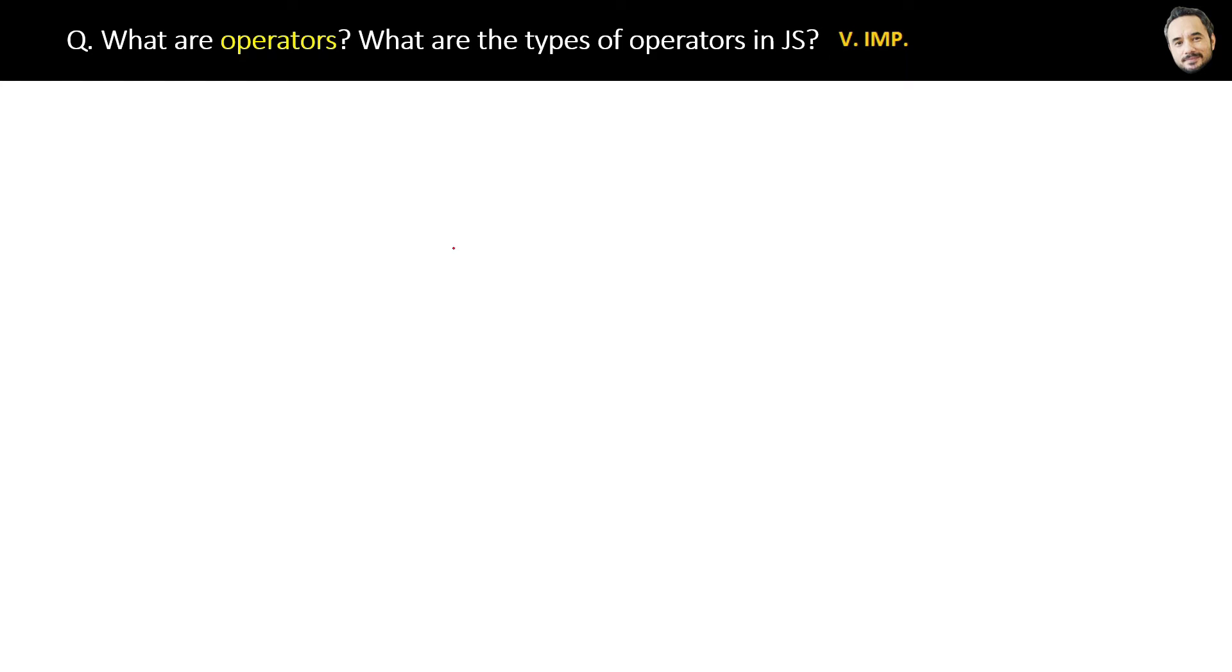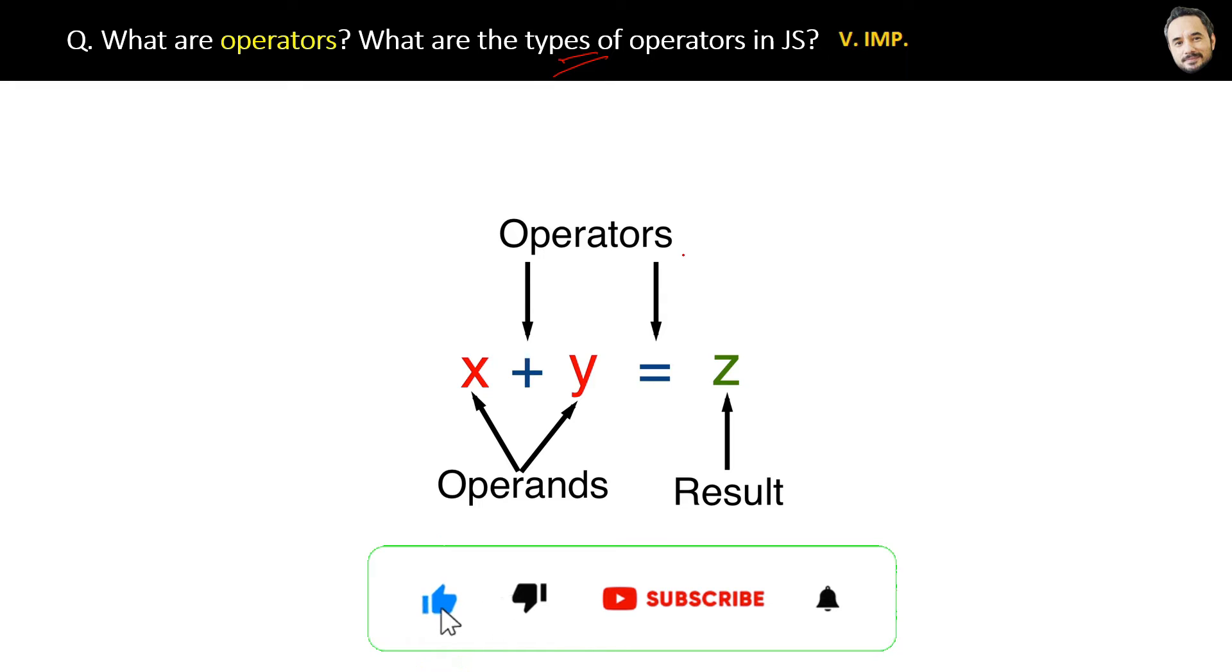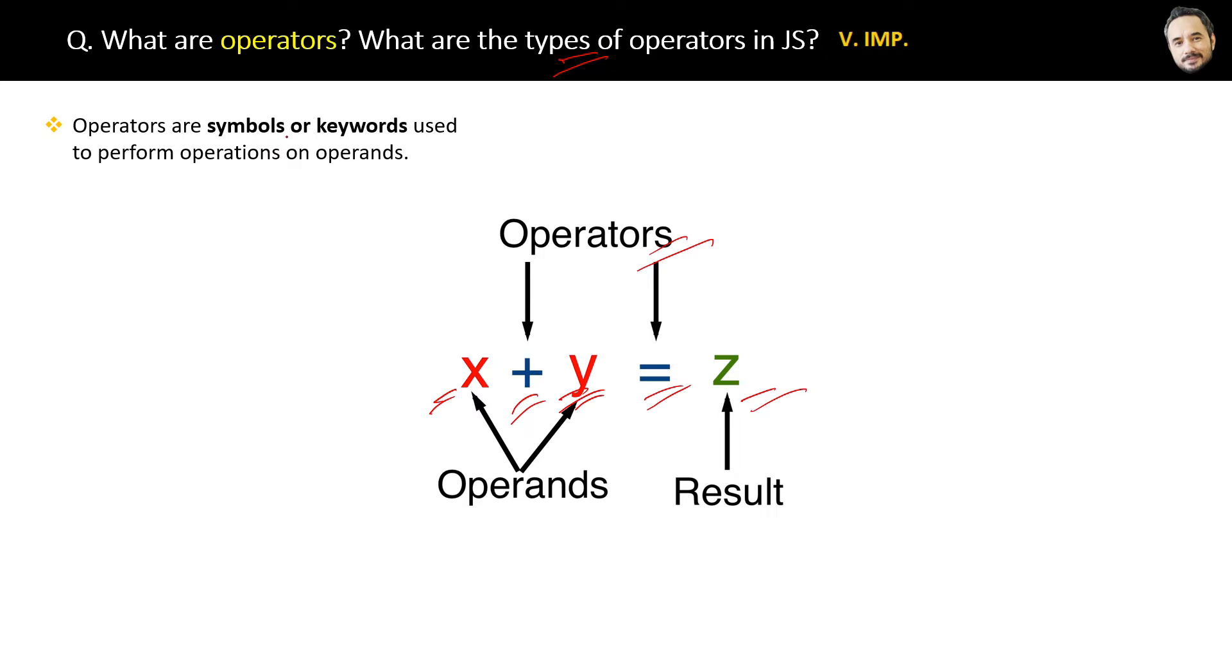What are operators? What are the types of operators in JavaScript? A very basic but very important question. See this statement - you are already aware that x and y are operands on which the operation will be performed, and plus and equal to are the operators that will perform the operation to get the final result. The definition of operators is: operators are symbols or keywords used to perform operations on operands.